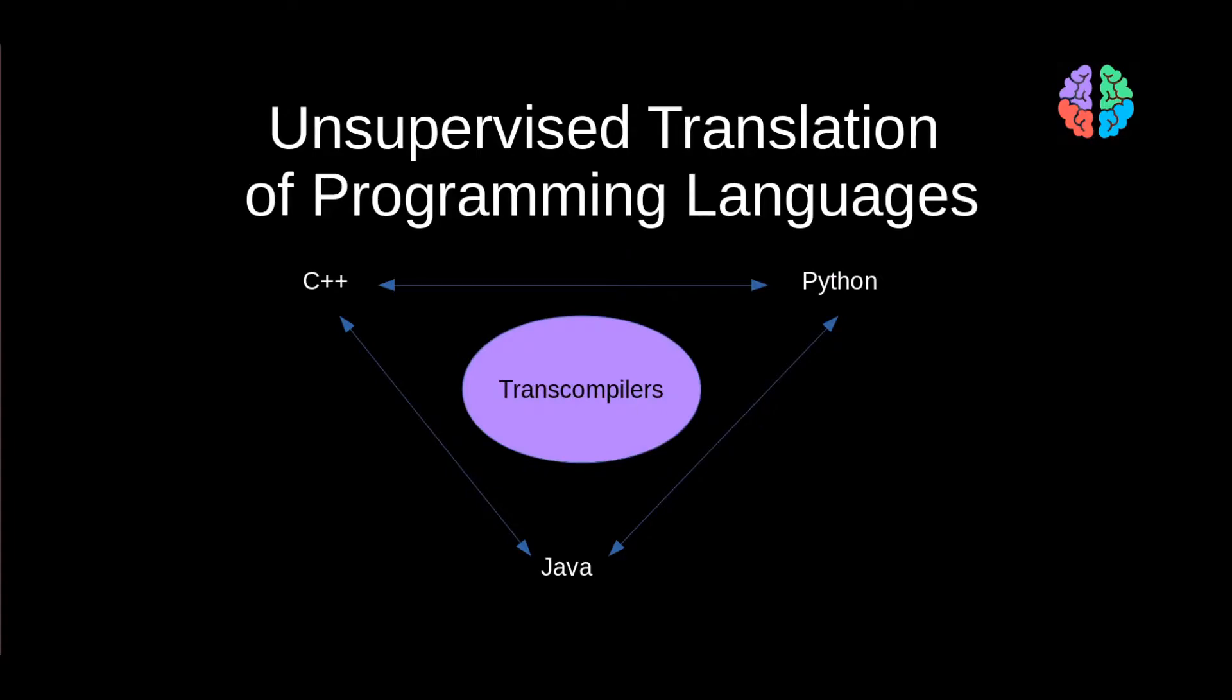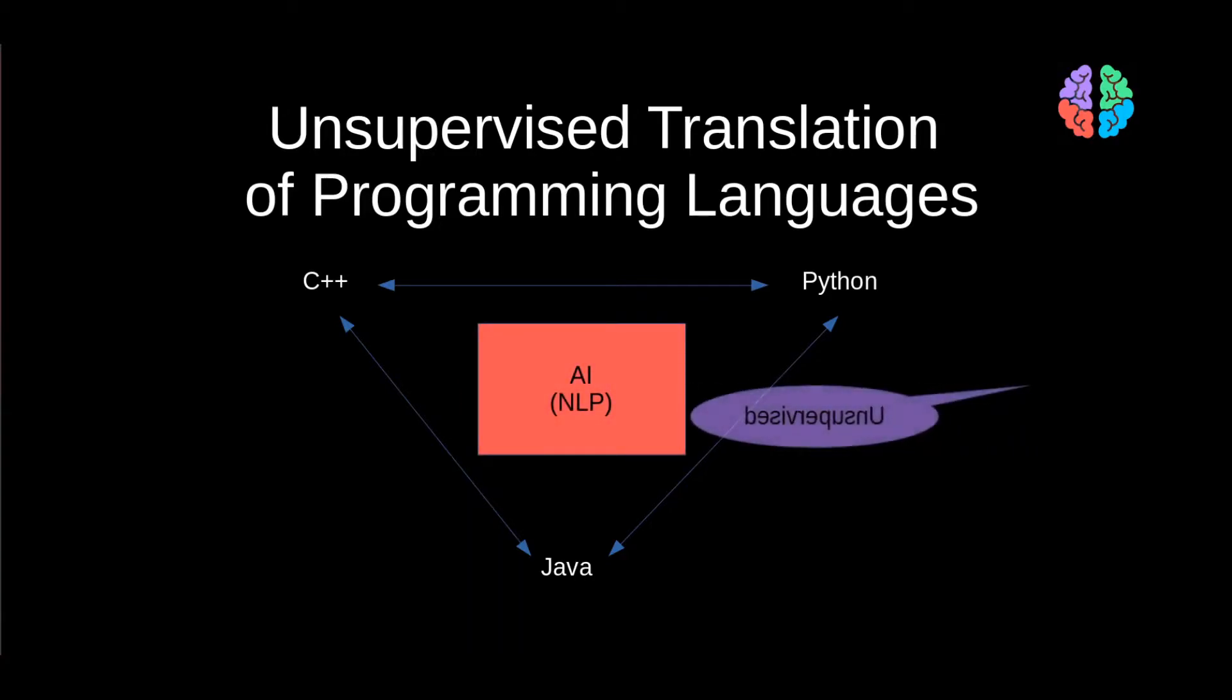Traditionally, trans-compilers are well-known for this problem of translating from one high-level language to another. They are rule-based systems where you define what syntax needs to be replaced by what. While AI systems are so good at translating spoken languages, can we use AI for trans-compiling? It'll be even better if we can do it in an unsupervised way. This paper from Facebook AI proposes just that.